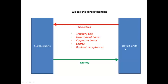We call this direct financing because the deficit units issue the securities directly to the surplus units, and the surplus units provide money directly to the deficit units.